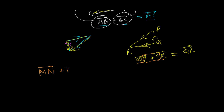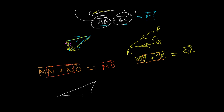Simply, if I write vector MN plus vector NO, just remove the middle part — that is N — and the resultant will be vector MO. In the triangle MNO, we add MN and NO; the resultant is MO. These two sides are taken in order representing the two vectors, and the third side taken in opposite order represents the resultant.